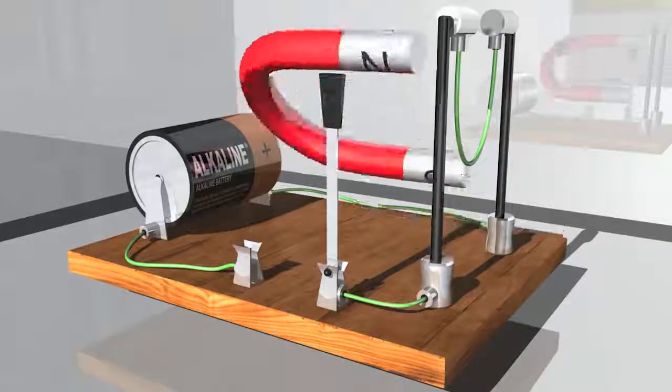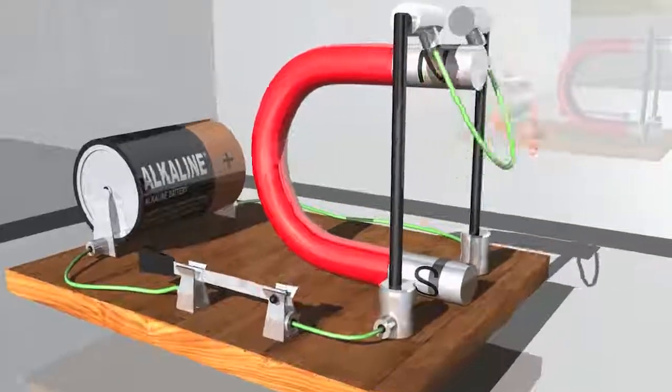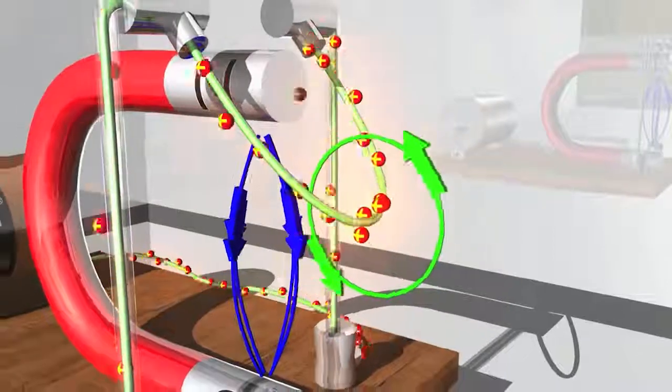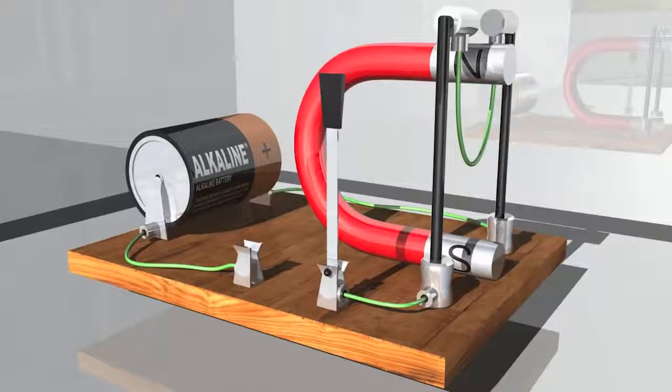Flipping the horseshoe magnet around to reverse the magnetic field around the pendulum will also cause the wire to swing in the opposite direction. The Lorentz force is what makes our electric motors work. Without this force, our modern world would be quite different.